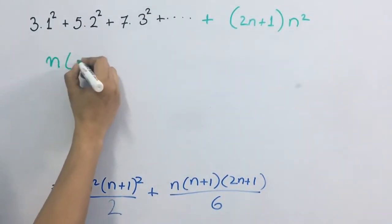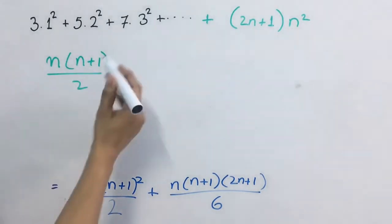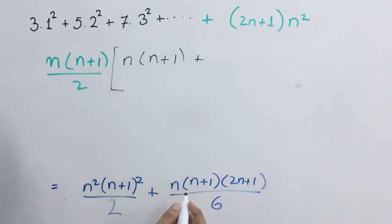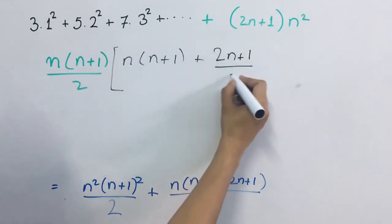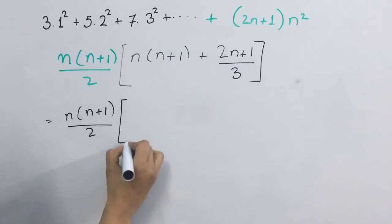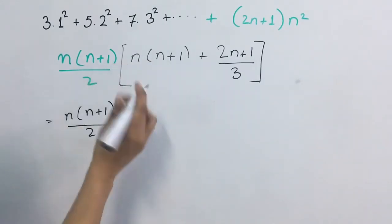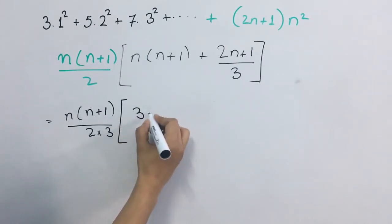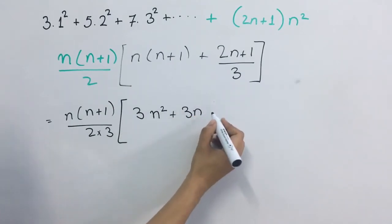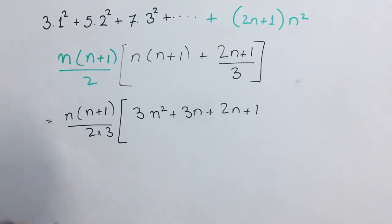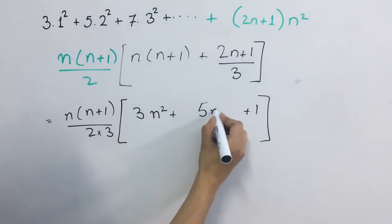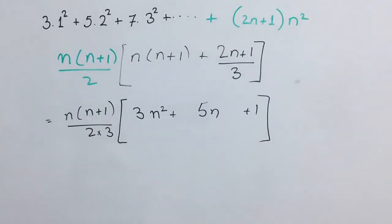Taking the common terms outside: n into n plus 1 upon 2. Andar kya bachega? n into n plus 1. Taking LCM by 3 multiplying, toh andar kya bacha: 3 times, bracket kya jaayega: n square plus 3n plus 2n plus 1, so this gives n square plus 5n plus 1. So this is going to be the sum of n terms of the given series.